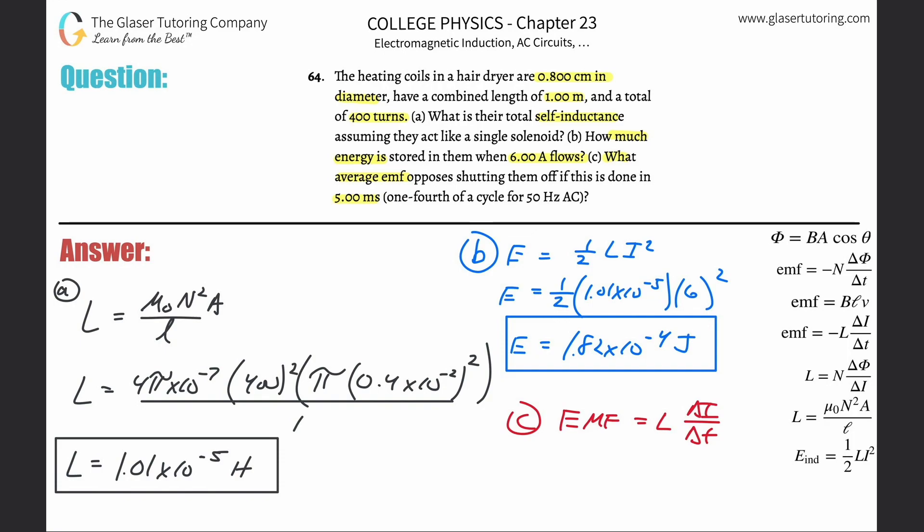So emf is going to be that inductance we found, 1.01 times 10 to the minus 5th, multiplied by the current, which was 6 amps, divided by the time that's in milliseconds—we need that in seconds, so multiply that by 10 to the minus 3.